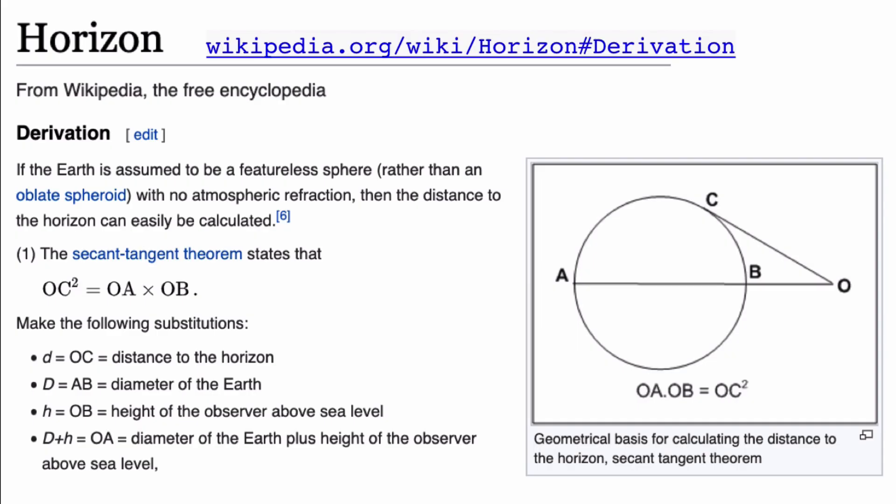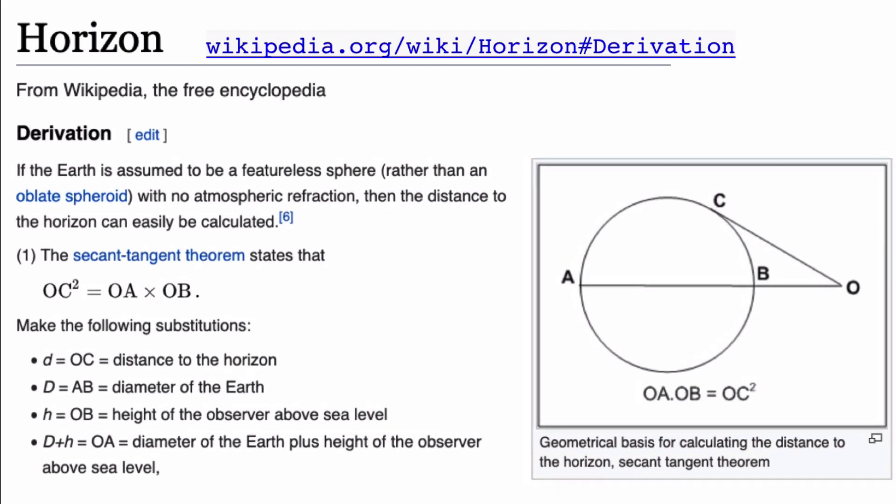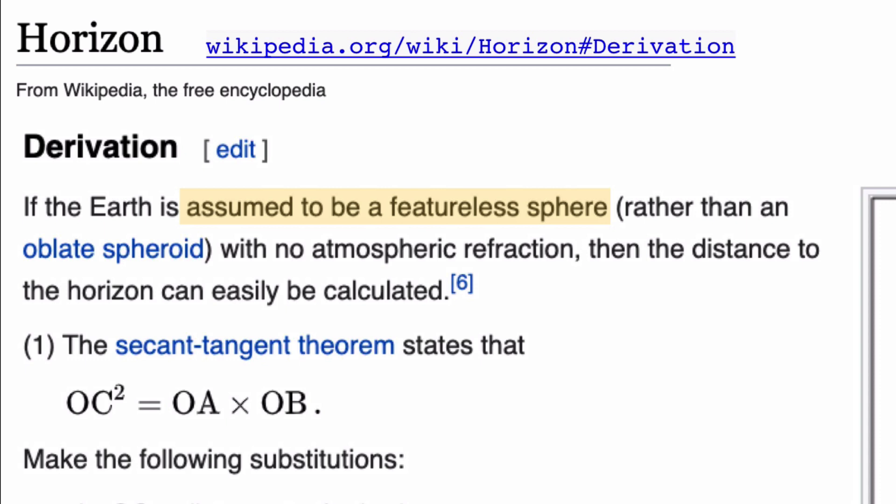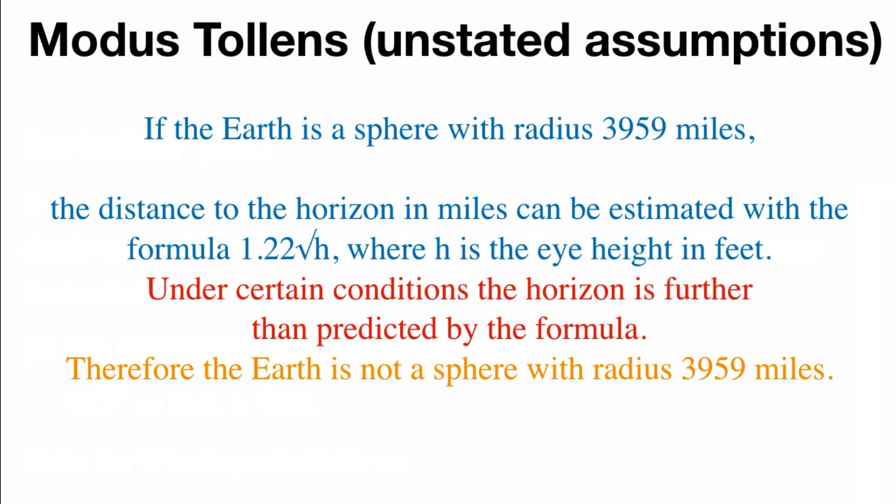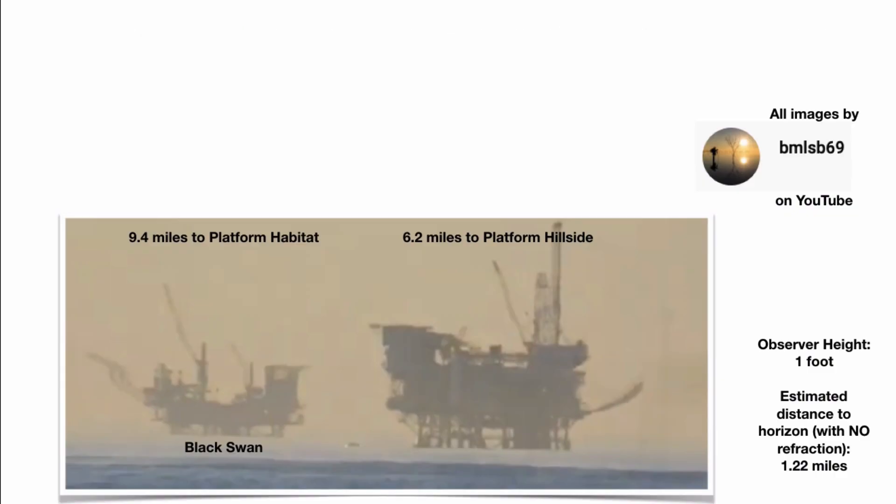So in the flat earth case, what are some of the unstated assumptions behind that formula? Well, the formula is derived from a featureless sphere, not even an oblate spheroid. Not only that, but it assumes that there is no atmospheric refraction. So again, we could restate the modus tollens for the flat earth argument, but let's include the unstated assumptions. If the earth is a sphere with radius 3,959 miles and there's no atmospheric refraction, then the distance to horizon can be estimated with that formula.